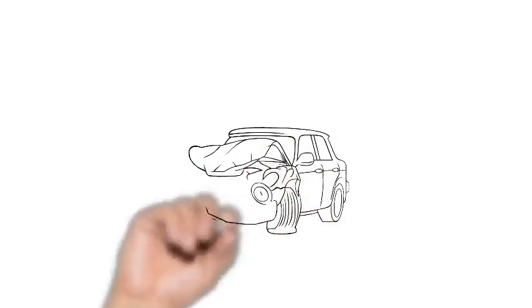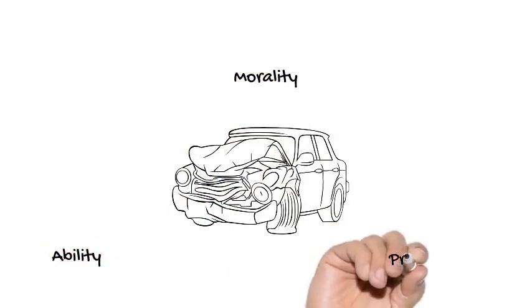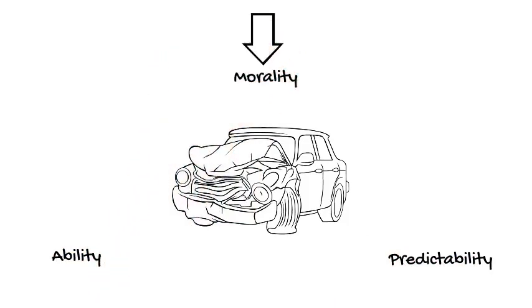Now imagine that you have car trouble and you need to find a mechanic. How might the map of trust help you here? What would failings on each of the dimensions look like in this situation? Let's take morality. Suppose the garage nearby has a reputation for overcharging customers or doing repairs that aren't really necessary or lying about the work that they did. This would be a failing of morality and would cause low trust.